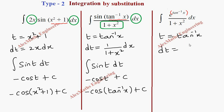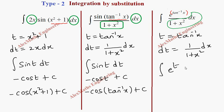We find dt = 1/(1 + x²) dx, and the entire term dx/(1 + x²) appears in the question. Writing everything in terms of t, we get integral of e^t dt. The integration of e^t is e^t itself plus c.